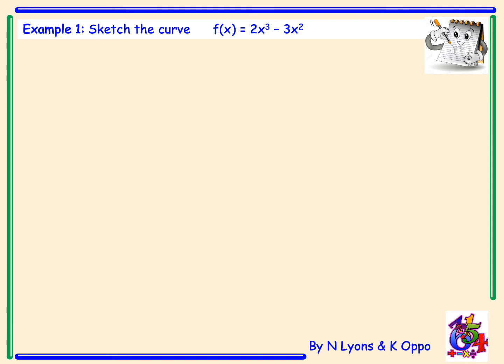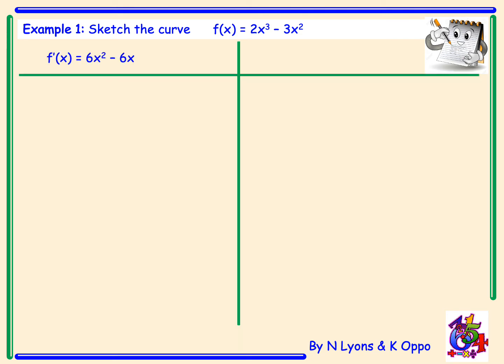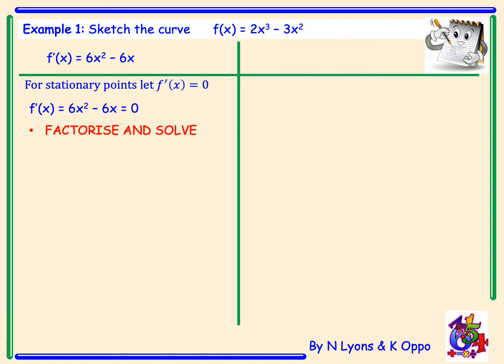Let's start by looking at our stationary points in order to sketch the curve. Our derivative is 6x² - 6x. For stationary points we let f'(x) = 0. Factorising, we take a common factor of 6x, leaving the bracket (x - 1) = 0. Therefore we have stationary points when x = 0 and x = 1.